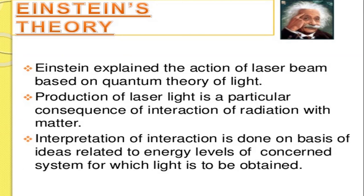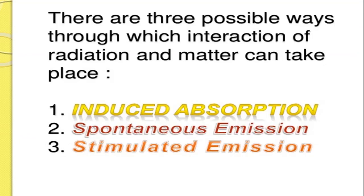Einstein explained the action of laser beams based on the quantum theory of light. The production of laser light is a particular consequence of the interaction of radiation with matter. This interpretation is done on the basis of energy levels of the concerned system. There are three possible ways through which interaction of radiation and matter can take place: induced absorption, spontaneous emission, and stimulated emission.